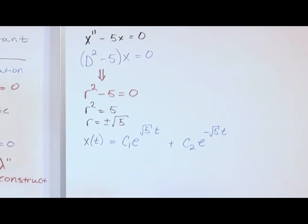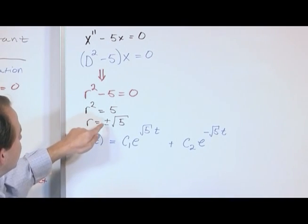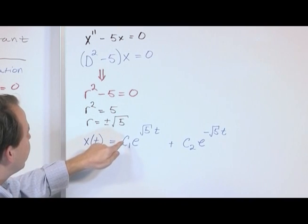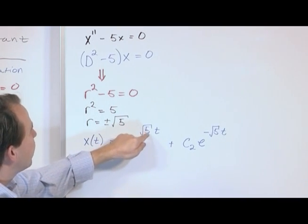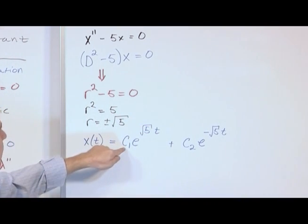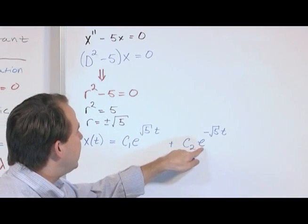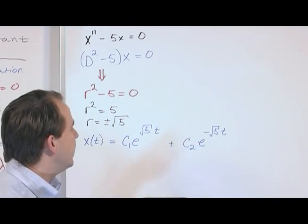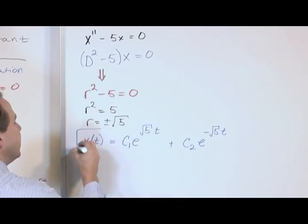So all we did, literally, was we said root 1 is positive √5, so we write it as e^(√5t). We have to have a constant out in front. And we have plus another constant, e^(-√5t). And that, my friends, is the complete solution.